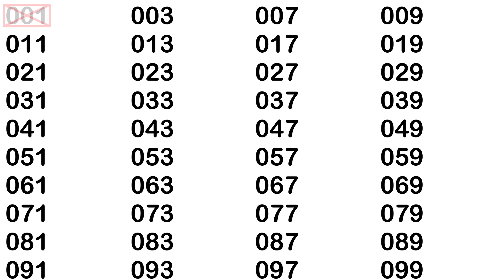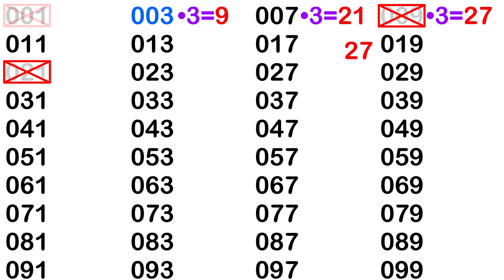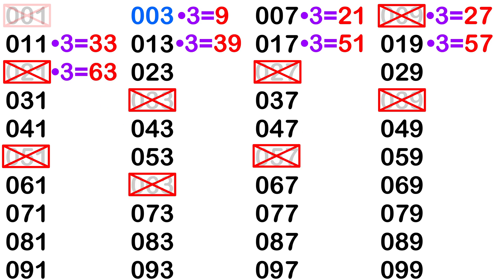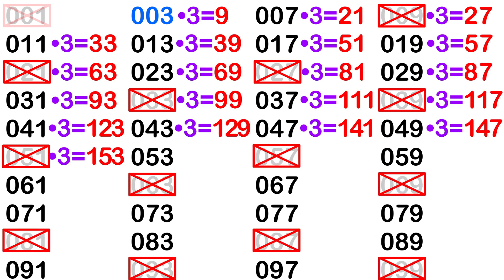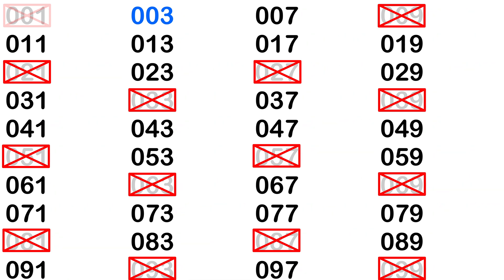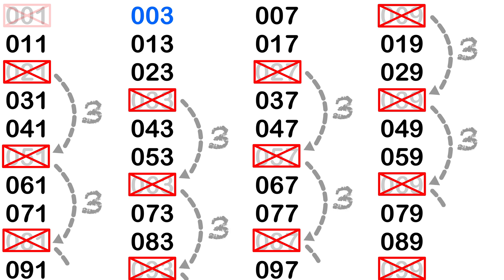Now we can focus on a method of eliminating numbers that are not prime. First, 1 is not prime because it only has one unique factor. The next number is 3, which is prime because it has two unique factors: 1 and 3. If we take 3 and multiply it with every number on the 1379 list, it eliminates numbers that are not prime. For example, 3 times 3 equals 9 is not prime, 3 times 7 equals 21 is not prime, 3 times 9 equals 27 is not prime. As we keep multiplying every number by 3, we eliminate numbers on the list. Looking at each column, we can see a pattern: every third number is eliminated.